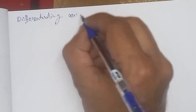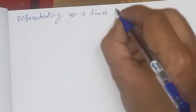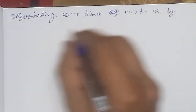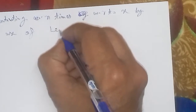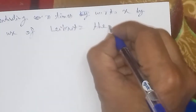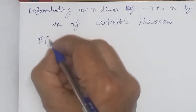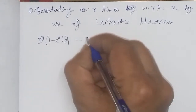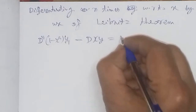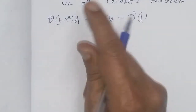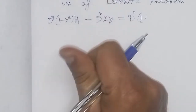Differentiating n times with respect to x. Using Leibniz theorem on the expression (1 minus x square)·y₁ minus x·y equals 1. There are 3 terms: 2 on the left hand side and 1 on the right. We differentiate each n times. We can write the n-time differentiation as dⁿ of (1 minus x square)·y₁, then the second term x·y, and right hand side term, all differentiated n times.